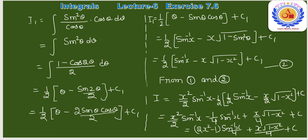(1/2)∫(1 − cos 2θ)dθ। Integration: (1/2)[θ − sin 2θ/2] + C₁ = (1/2)[θ − sin θ·cos θ] + C₁। यहाँ θ = sin⁻¹(x), cos θ = √(1−x²)।